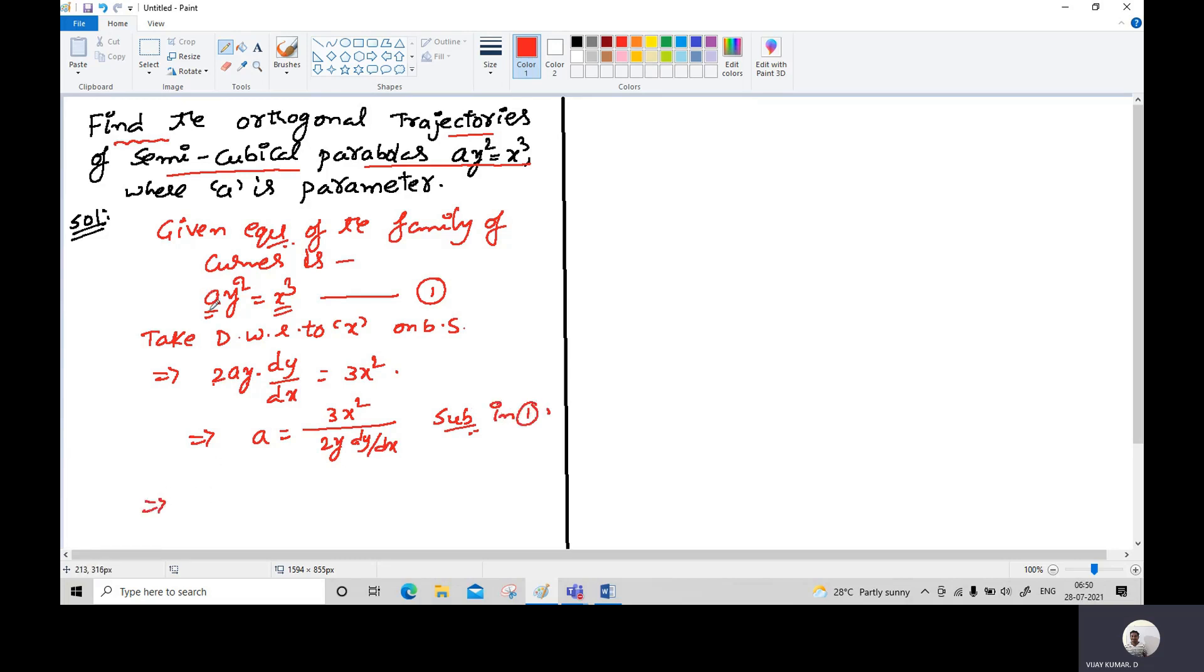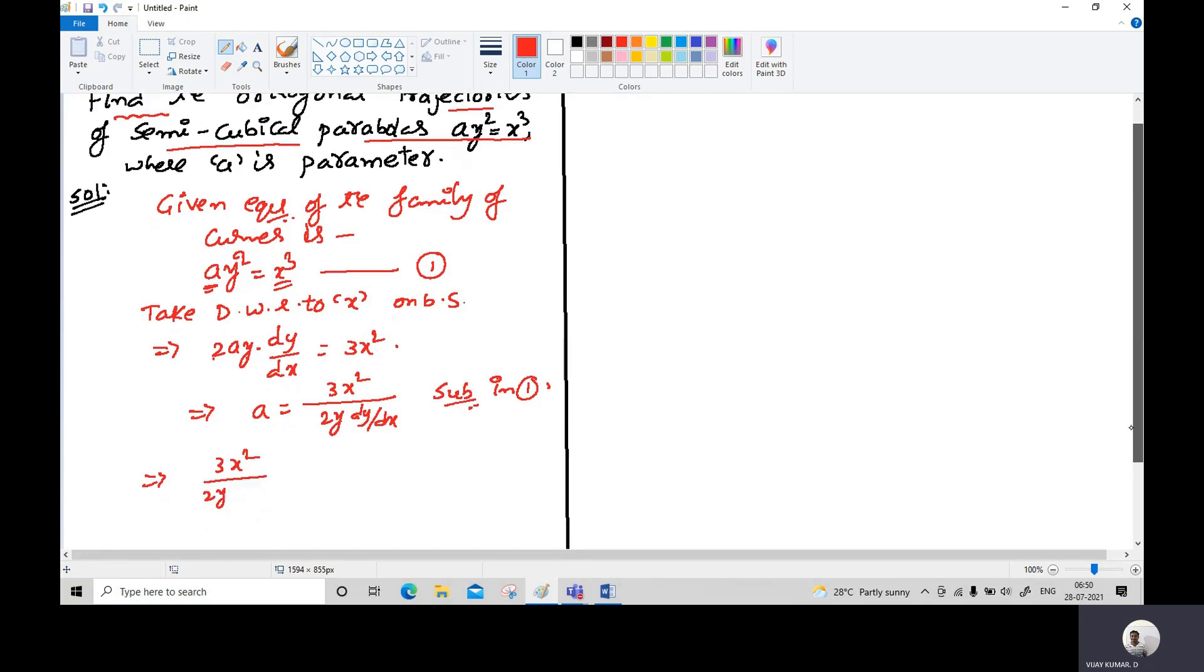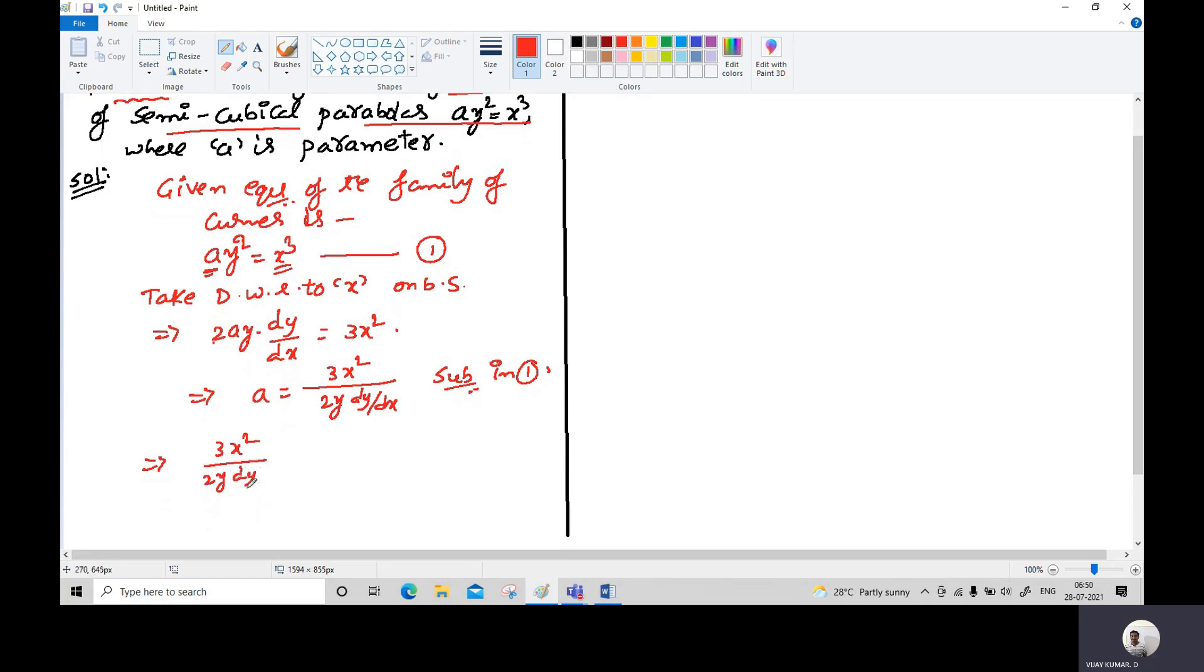So you will get [3x²/(2y)]·y²·dy/dx = x³. In the right hand side of the given equation, we have x³. Simplify the terms.